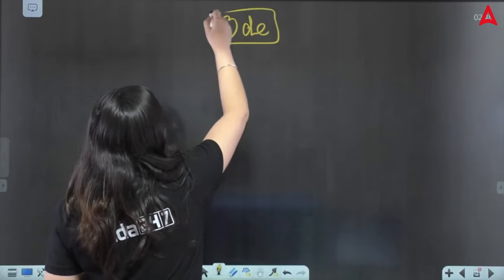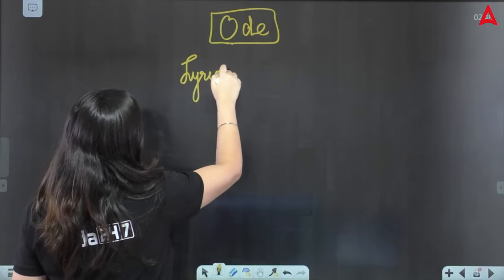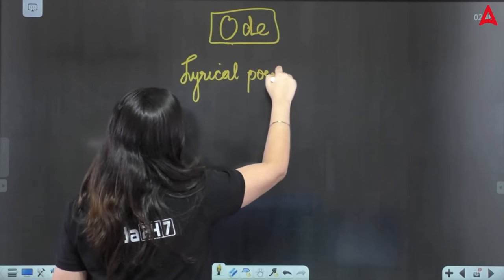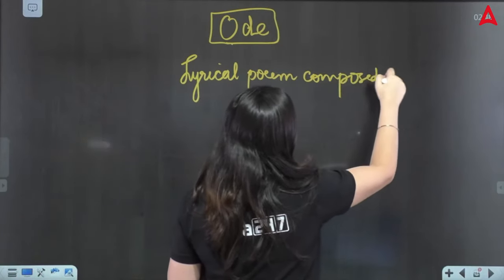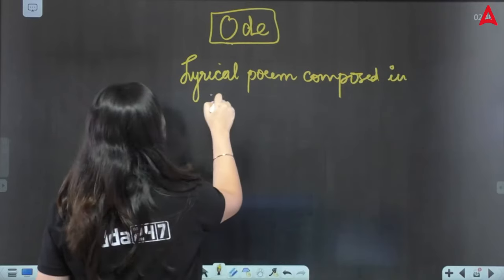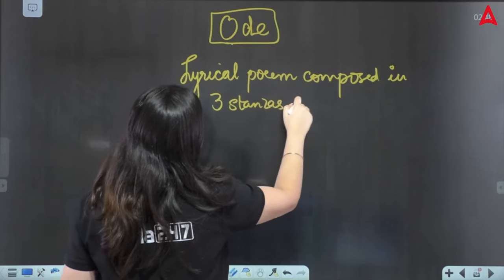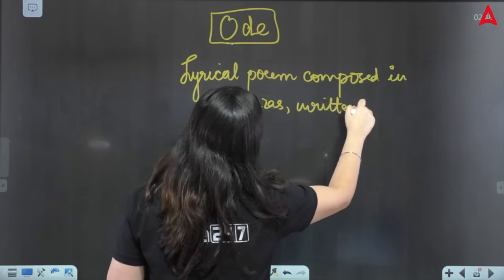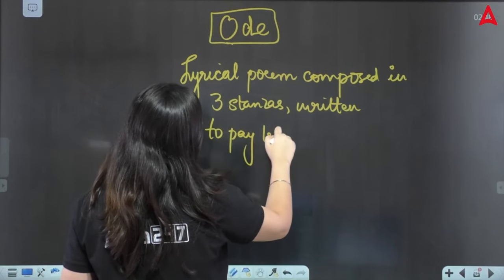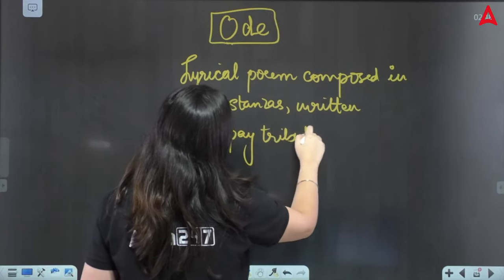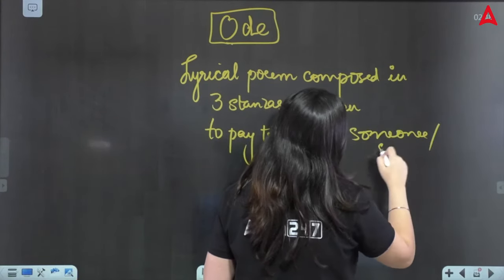An ode is basically nothing else but a lyrical poem, composed in three stanzas, written to pay tribute to someone or something. Someone or something — whoever you are giving tribute and respect to through this poem — that person or object can be living or dead.